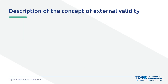External validity is sometimes called generalizability, which refers to how much of an initial study's research findings can be applied elsewhere. Other terms used are transferability, which is similar to generalizability, and transportability, which involves predicting how well an intervention will work in a new setting based on how similar or different it is from where it was first tested. It's like saying, given what we know, can we expect this to work elsewhere?